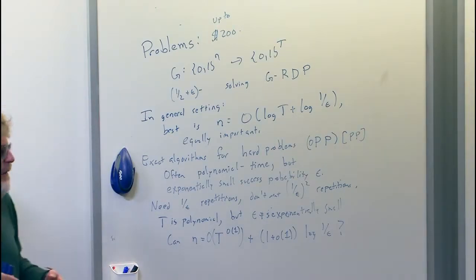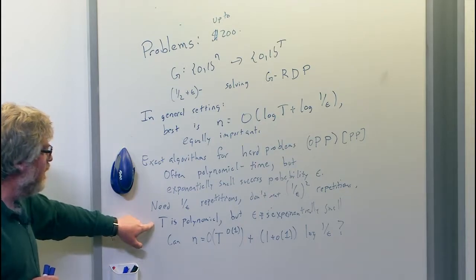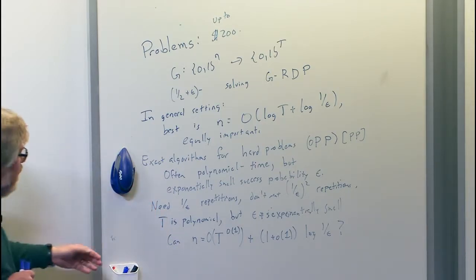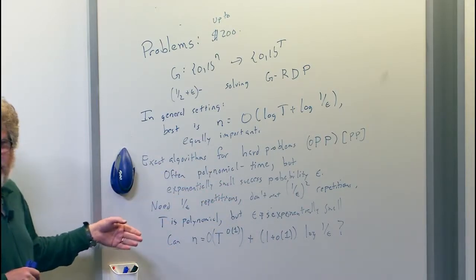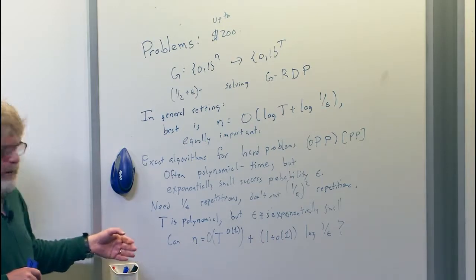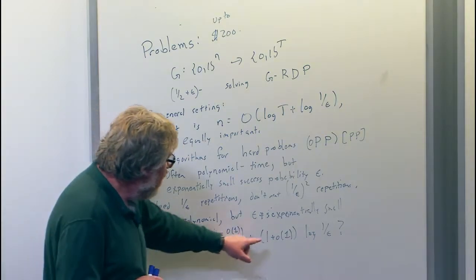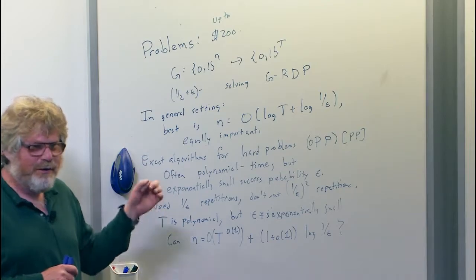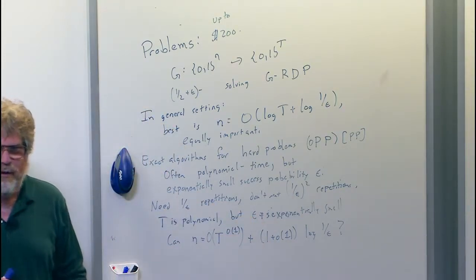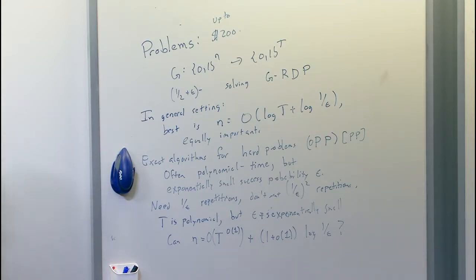But in our setting, t is much smaller than 1/epsilon. So the question is: can we have a pseudorandom generator where the seed length could be even close to t — just a little bit less than t — because we're willing to have mildly sub-exponential overhead in t, but we want it to be very tight in terms of epsilon. We could only afford about 1 times log 1/epsilon. The dependence on epsilon would have to be exactly log 1/epsilon, or maybe 1 plus little-o(1) times log 1/epsilon.